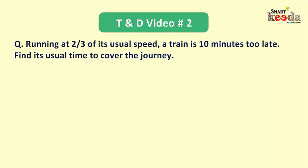Let's now move to the third and final question of this video tutorial. The language of this question goes like: running at 2/3 of its usual speed, a train is 10 minutes too late. Find its usual time to cover the journey.